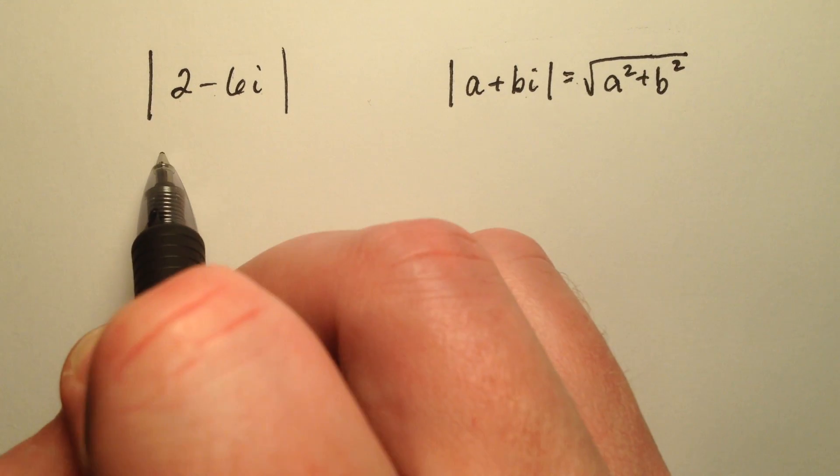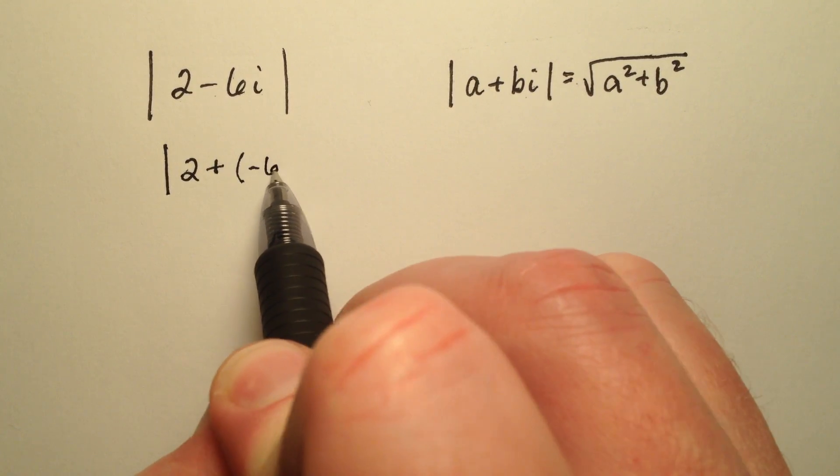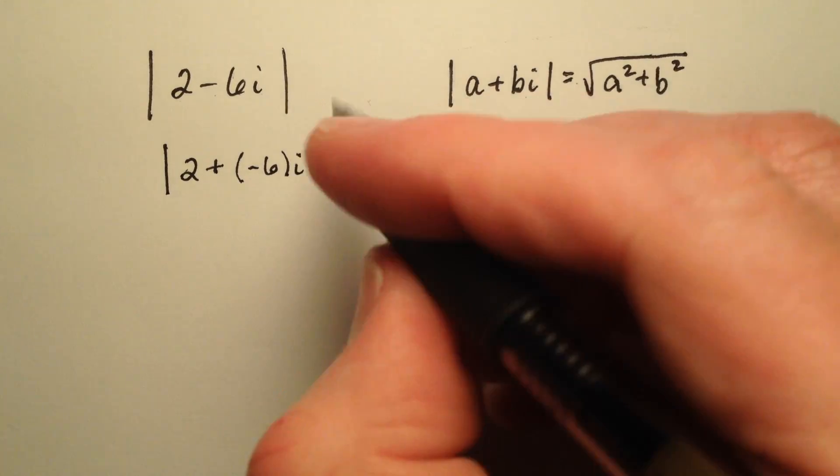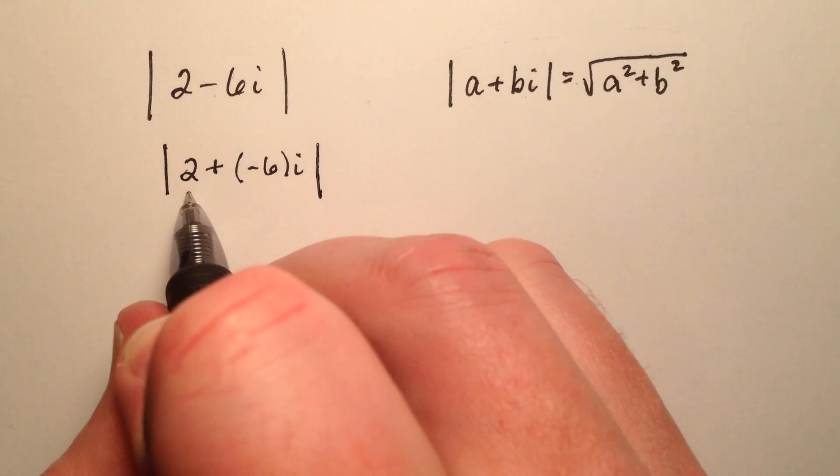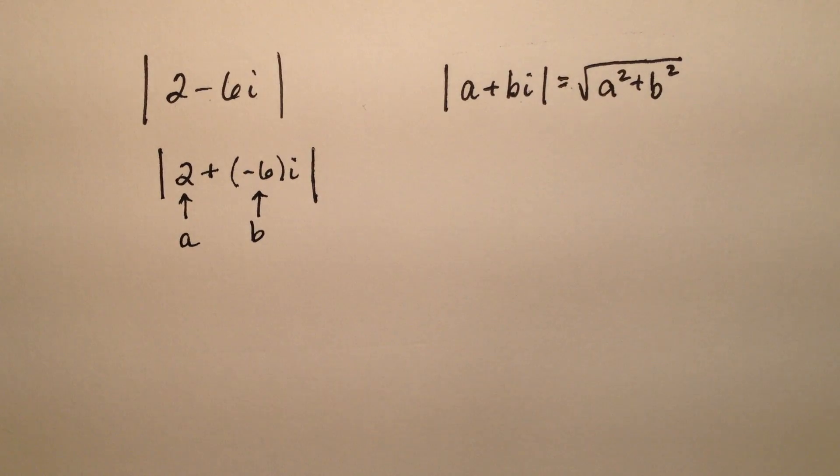So a couple things here: I need to rewrite this complex number as 2 plus negative 6i, where my 2 is going to be my a and my negative 6 is going to be my b.